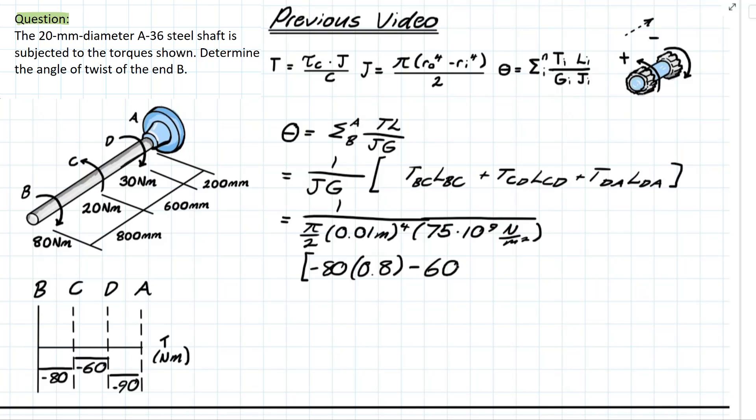and we're doing the same thing for the next segment as well 60 times 0.6 and similarly 90 times the 0.2